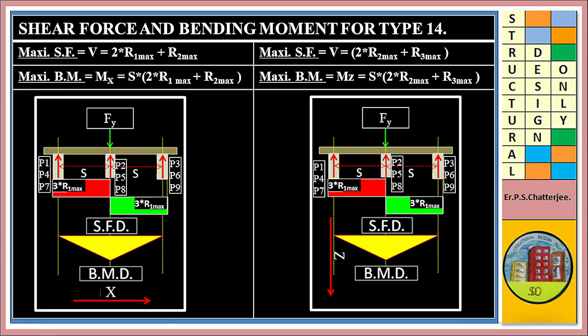Shear force and bending moment for Type 14: maximum shear force V equals 2 times (R1 max plus R2 max). Maximum bending moment Mx equals S times 2 times (R1 max plus R2 max). Maximum shear force in Z direction equals 2 times (R2 max plus R3 max). Maximum bending moment Mz equals S times 2 times (R2 max plus R3 max).